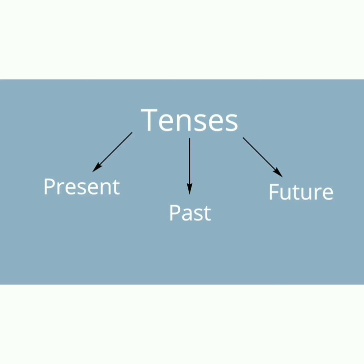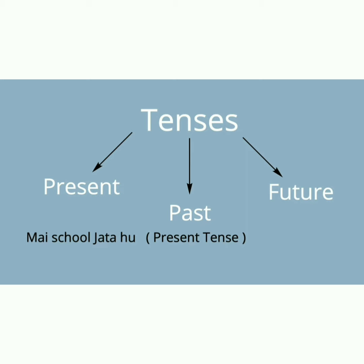آج ہم صرف present tense کی سبھی types پڑھیں گے۔ ان کو میں آپ کو ایک بار example کے ذریعے سمجھاتی ہوں۔ جیسے 'میں school جاتا ہوں' — یہ ہمارا present tense ہے، جو کہ ورتمان میں چل رہا ہے۔ 'جاتا ہوں' — یہ ہمیں پتہ چلتا ہے کہ last میں ہے، da ہے، di ہے — آ جاتا ہے۔ ہندی میں ta ہے، di ہے۔